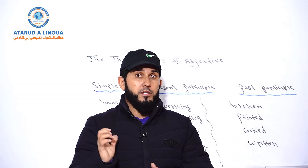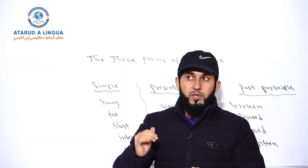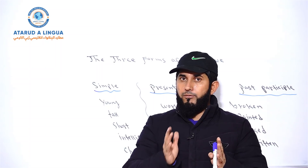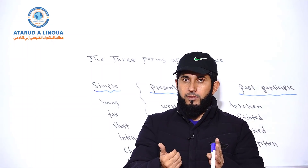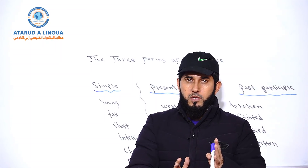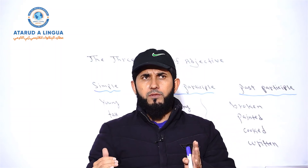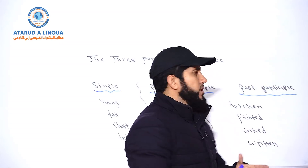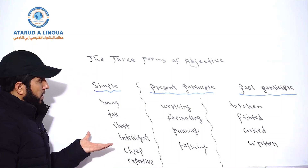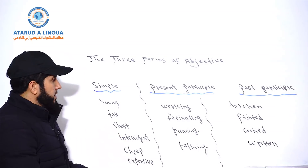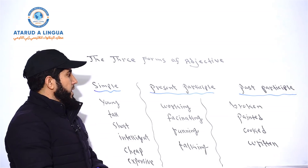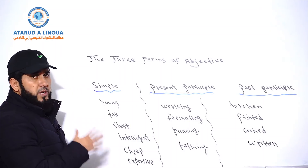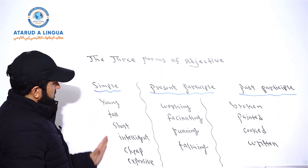Present participle adjectives are when a verb takes -ing and it functions as an adjective. Past participle adjectives use the third form of a verb as an adjective. So let's see how to use the -ing form of a verb as an adjective and the third form of a verb as an adjective.